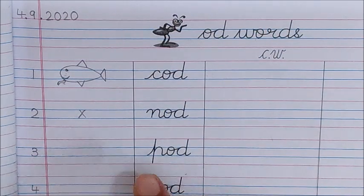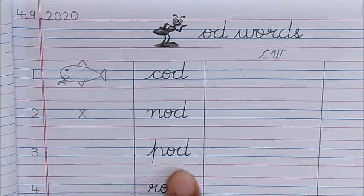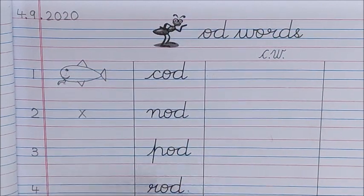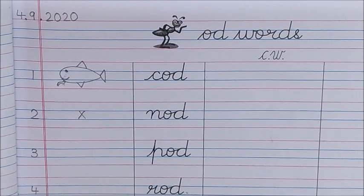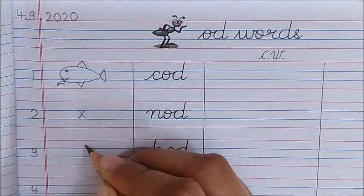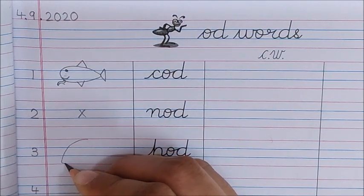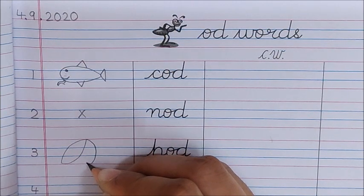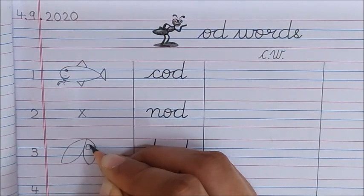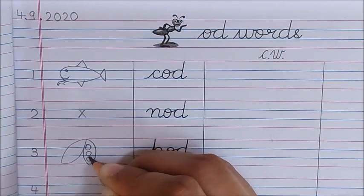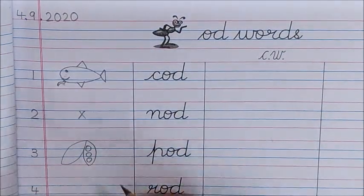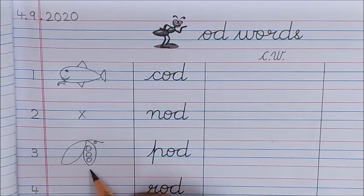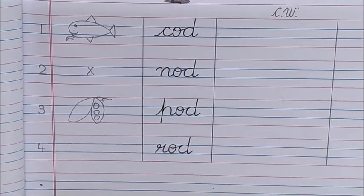Next word. P, O, D, Pod. P, O, D, Pod. Children, Pod means a pod of peas. Pod means matar ka chilka. And there are peas in it. Pod. This is a pod. Okay children, now time to read the next word.